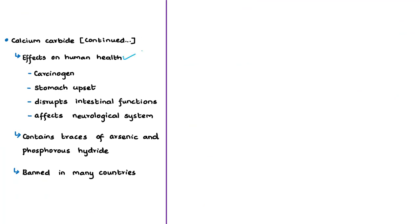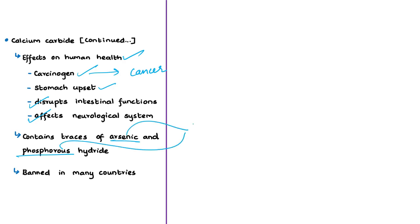Calcium carbide is a dangerous and corrosive chemical. It has carcinogenic properties — it may cause cancer — so it is hazardous to human health. Consumption of fruits ripened with calcium carbide causes stomach upset and disrupts intestinal functions. Since calcium carbide imitates acetylene gas, it may also affect neurological symptoms. Calcium carbide also contains traces of arsenic and phosphorus hydride, which are poisonous substances. Early symptoms of arsenic and phosphorus poisoning include vomiting, diarrhea, burning sensation of the chest and abdomen, thirst, weakness, and difficulty in swallowing.